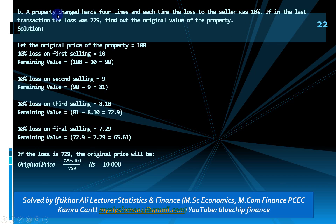Part (b): a property changed hands four times, each time with a 10% loss to the seller. If in the last transaction the loss was 729, find the original value. Assume original price = 100. After each selling: 90, 81, 72.9, 65.61. The loss in the fourth transaction is 7.29. If the actual loss is 729, then original price = 729 × 100 / 7.29 = rupees 10,000.